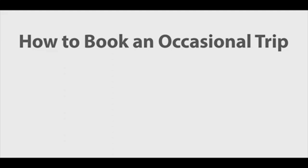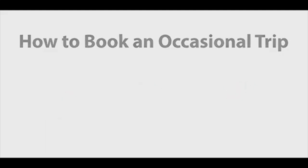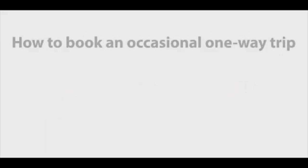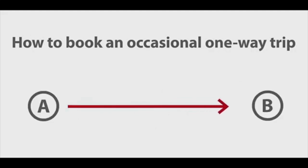How to Book an Occasional Trip. An occasional trip is a trip that will only happen once. There are three types of occasional trips: one-way, round, or multi-trips. How to Book an Occasional One-Way Trip. A one-way trip is one trip from an origin to a destination and does not include a return trip.